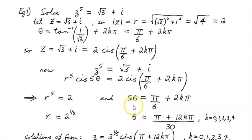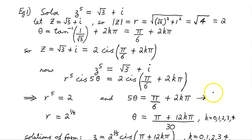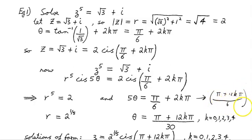Dividing through by 5, θ equals (π/6 + 2kπ) / 5. Getting a common denominator of 30, that gives us (π + 12kπ) / 30. So θ = (π + 12kπ) / 30, for k = 0, 1, 2, 3, 4.